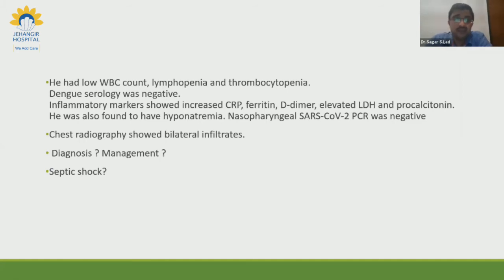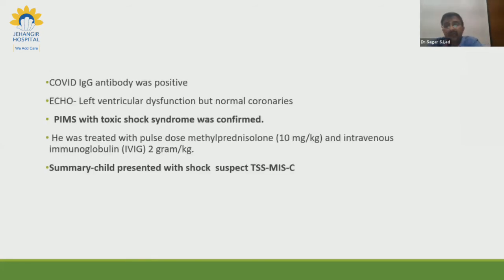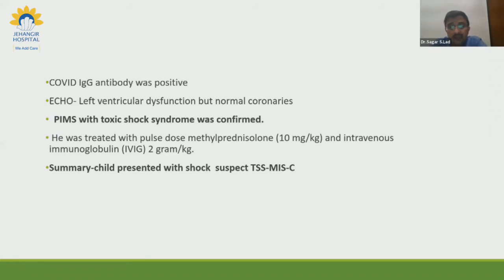Later, COVID IgG antibody was found positive. Echo showed left ventricular dysfunction with normal coronaries. This confirmed PIMS with toxic shock syndrome, and the child was treated with methylprednisolone and immunoglobulin. The take-home message is that any child presenting with shock-like presentation during this pandemic — you need to think of toxic shock syndrome secondary to MIS-C. In India this is a diagnosis of exclusion, as dengue, typhoid, leptospira, and rickettsia also exist and need to be ruled out before jumping to MIS-C.